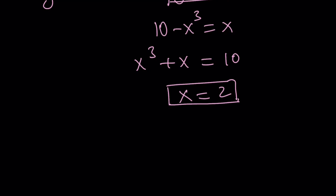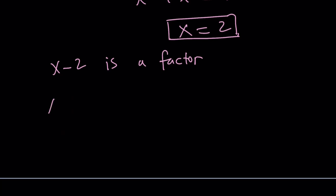So, knowing that x equals 2 is a solution, the factor theorem tells us x minus 2 is a factor. So using that, we can go ahead and factor this expression. x cubed plus x equals 10, or I'm going to write it as minus 10, and then I'm going to set it equal to 0. So we have the following.